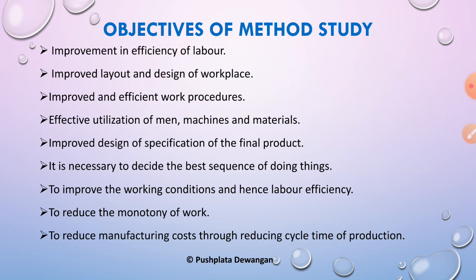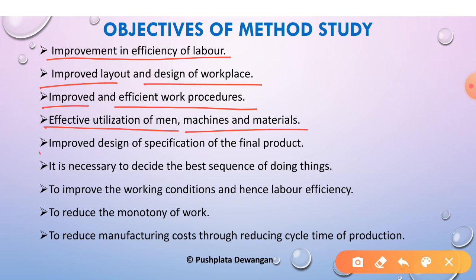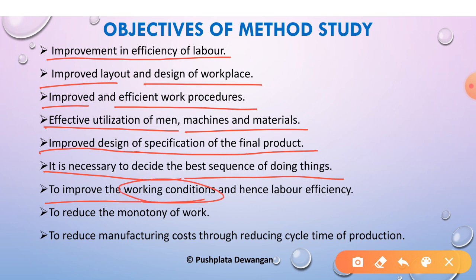The objectives of method study include: improvement in labor efficiency; improved layout and design of the workplace; improved and efficient work procedures affecting utilization of man, machine, and material; improvement in design specifications of the final product; determining the best sequence of doing things; improving working conditions of employees; reducing the monotony of labor; and reducing manufacturing cost and cycle time of production.